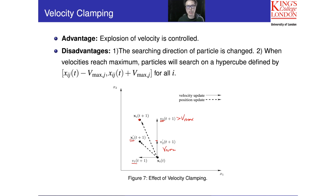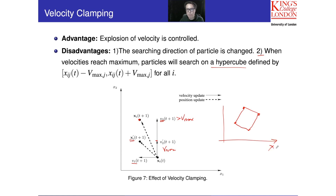Another issue is that when the velocity reaches maximum each time, it just goes in a certain direction, meaning it will only search the hypercube. In a two-dimensional case, you will find that PSO is very sensitive to control parameters C1 and C2, compared with genetic algorithm. When we do not choose the right C1 and C2, the particle will just search a hypercube or cause instability.